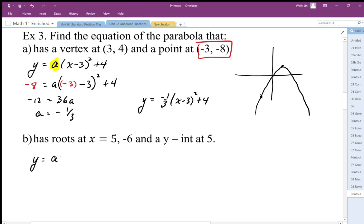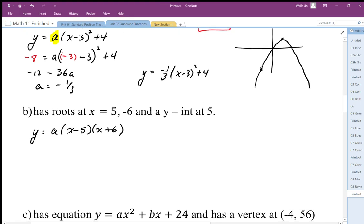If we set this up with factored form, we have to remember there's always an a value that has to be solved for. So we're going to have roots at 5 and -6, then we need to solve for the a value.